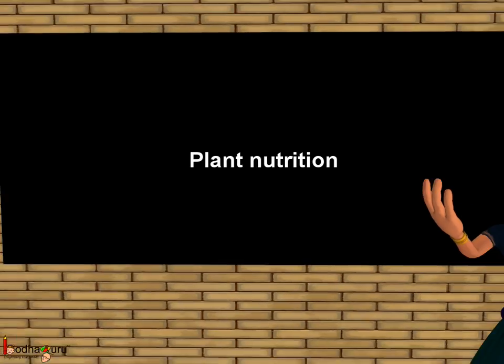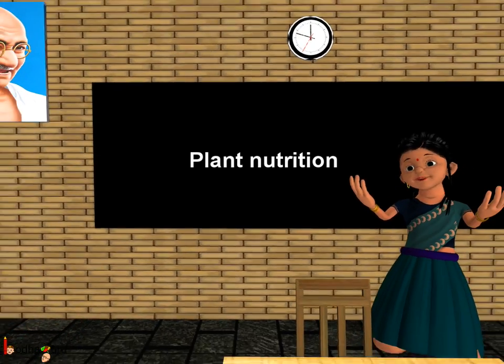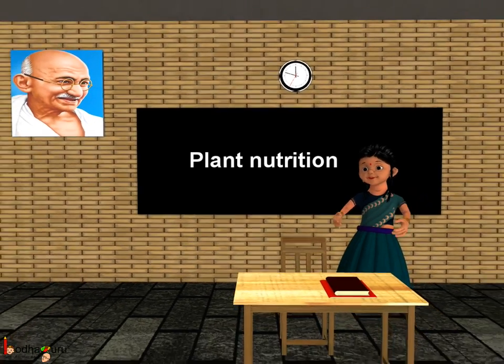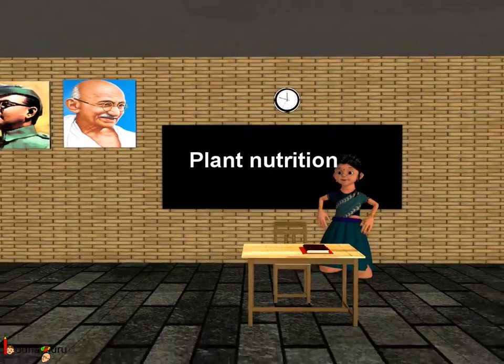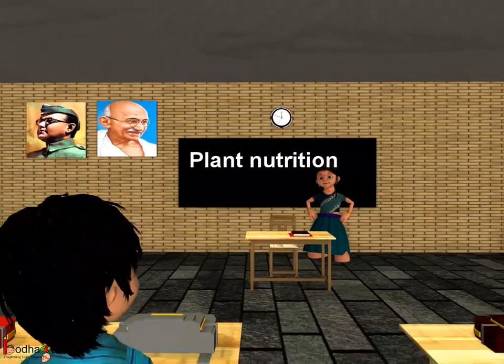For example, the Venus flytrap. So that was all about plant nutrition. Bye-bye, children.